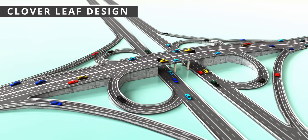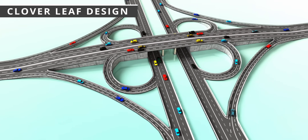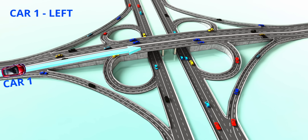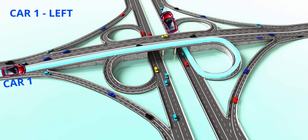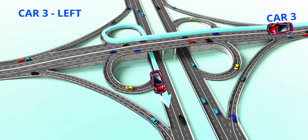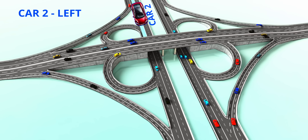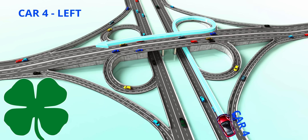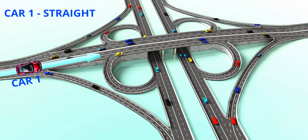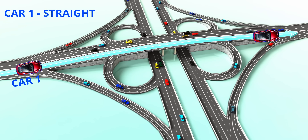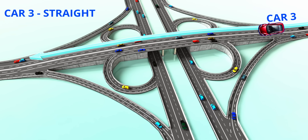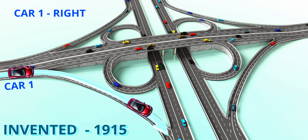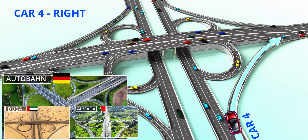The Cloverleaf interchange might be the most beautiful innovation in civil engineering. Just observe these line animations to understand how this design achieves this. This design, which resembles a cloverleaf, is used when two highways intersect. The design allows free-flowing movement of traffic. Invented in 1915, this interchange design began to mushroom all over the world.